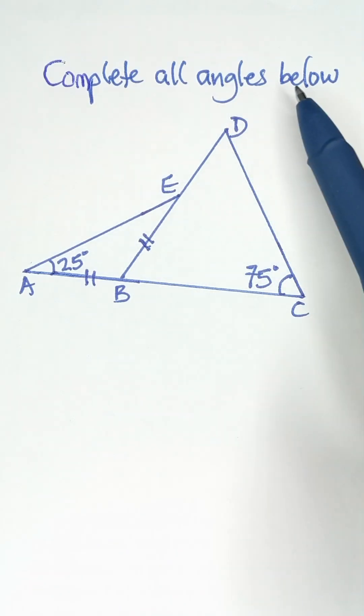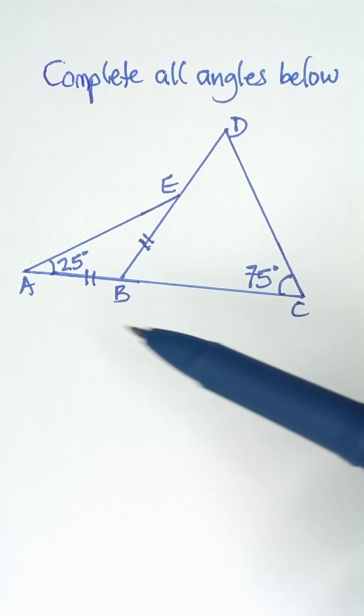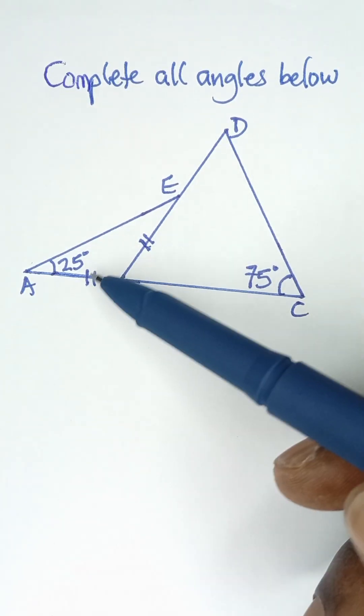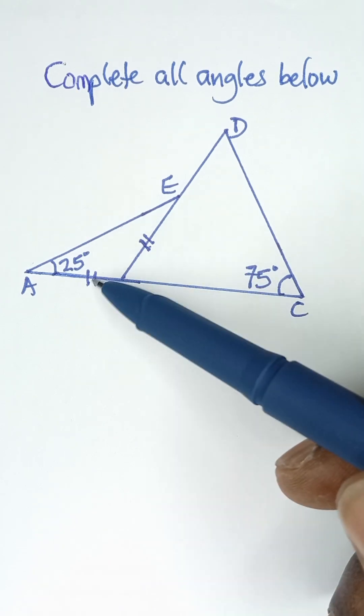Complete all angles below. Now, if you look at this triangle, triangle ABE, this is an isosceles triangle where two sides are equal.